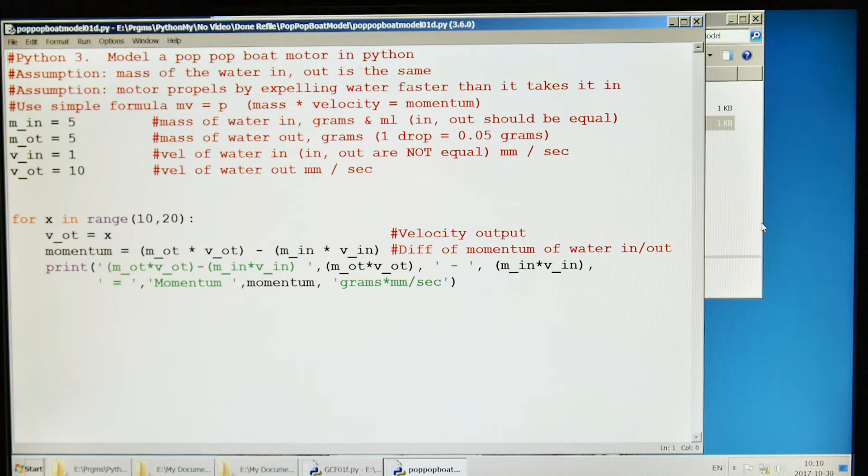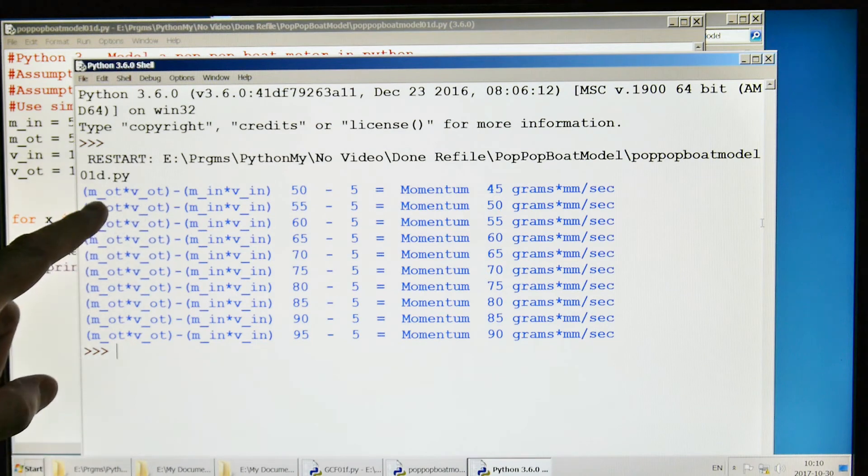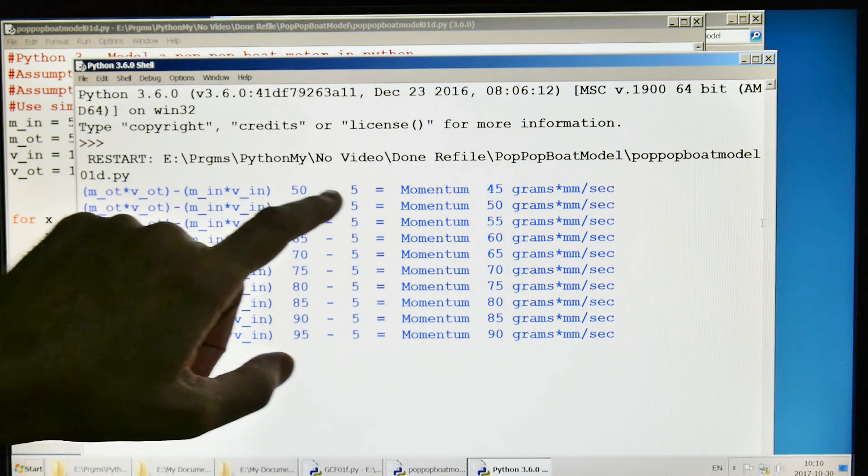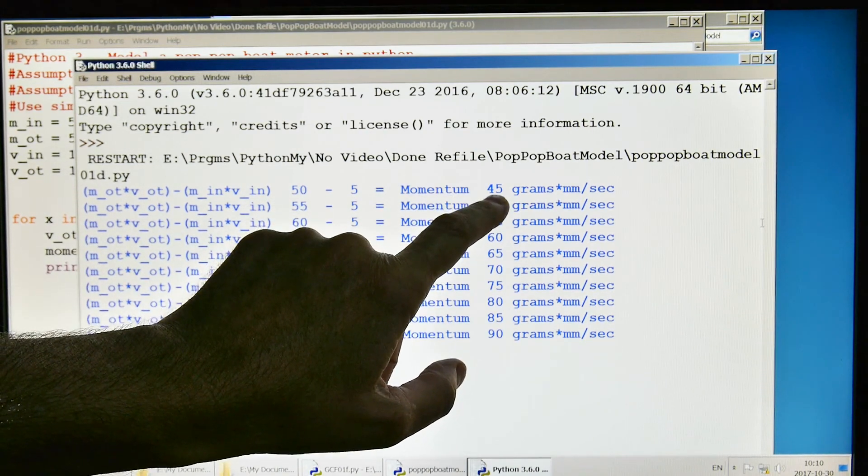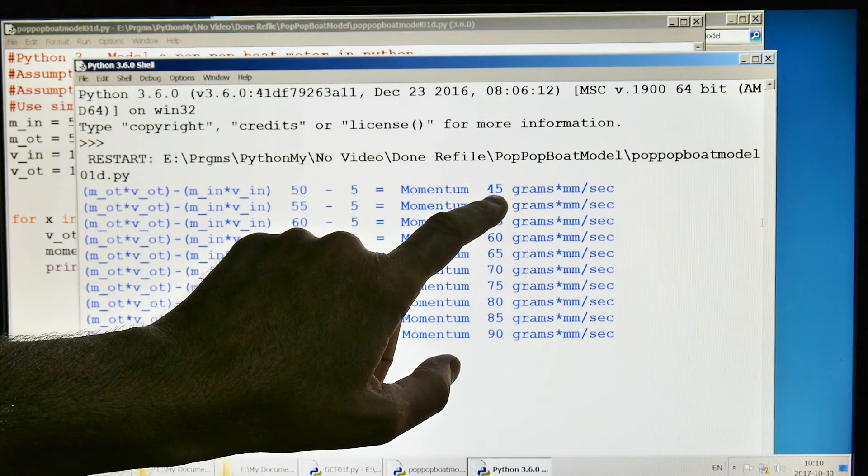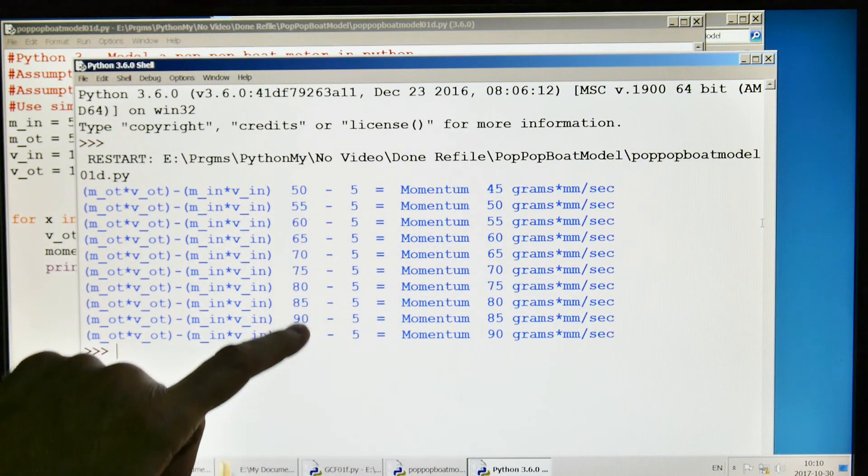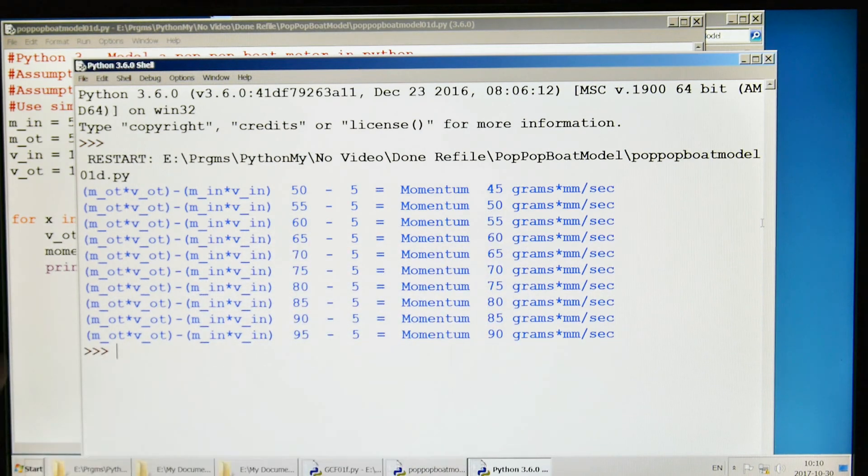Let's run the program and see what we get. Here we go. Here's our momentum out, momentum in. We started out with 50, we're going to subtract 5, and our momentum is 45 grams, gram millimeters per second forward. As we go down here, the number goes up, and not surprisingly, the momentum forward goes up.